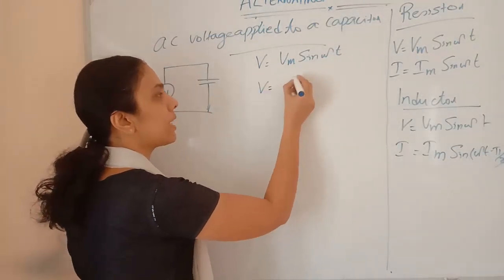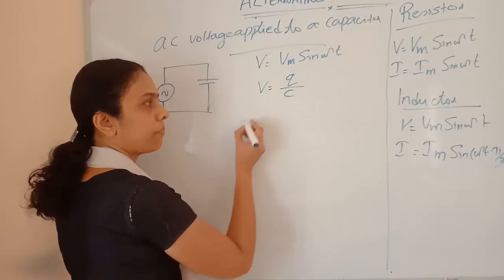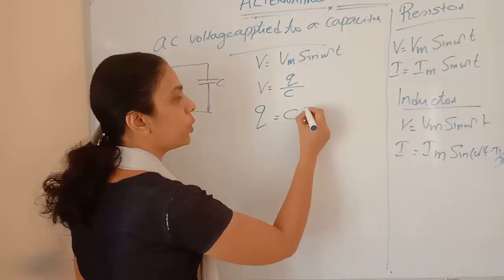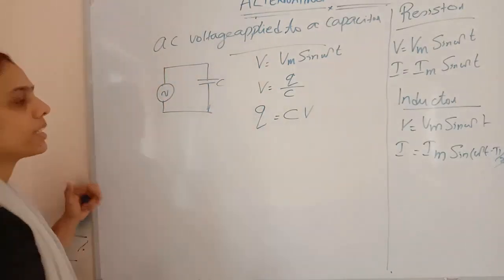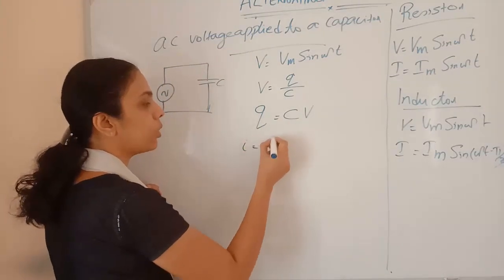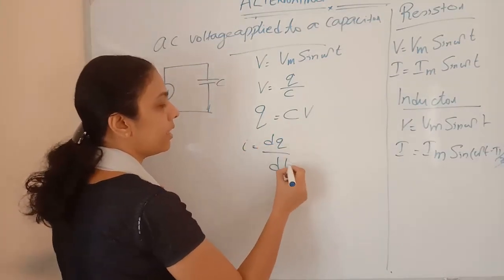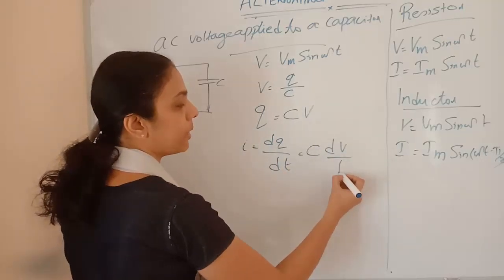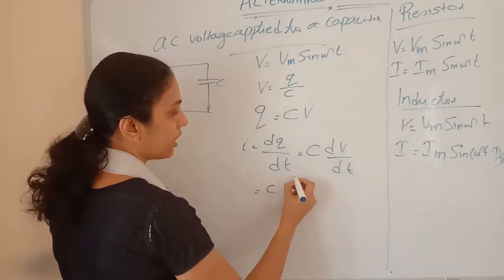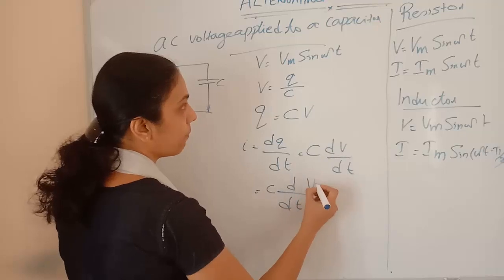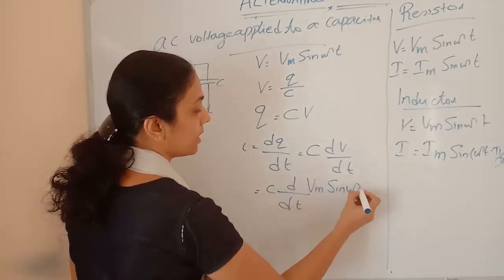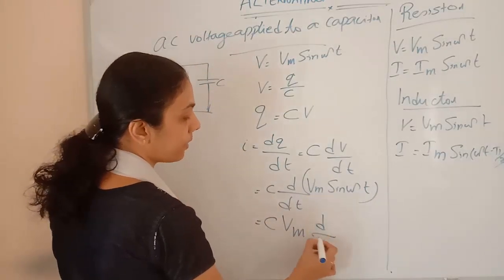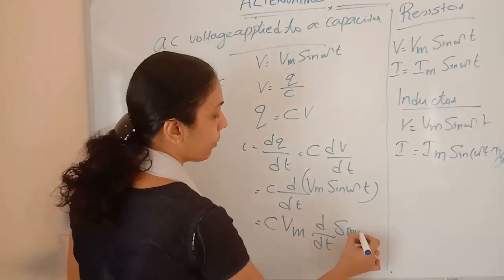We know that V equals Q/C, so Q equals CV. The current developed is I equals dQ/dt. Substituting Q = CV, and since C is a constant, we get I equals C dV/dt. Now we differentiate V, where V equals Vm sin(ωt) and the peak voltage Vm is constant, giving us I equals C × Vm × d/dt of sin(ωt).